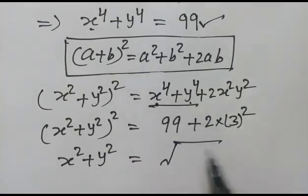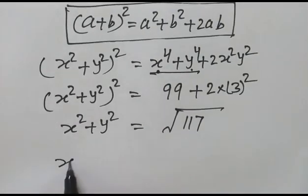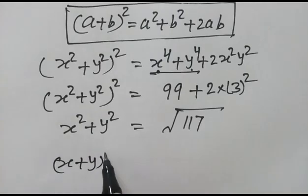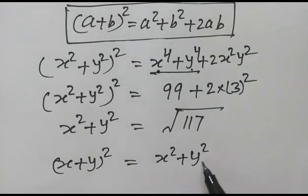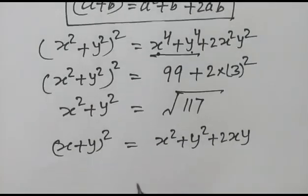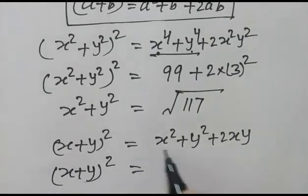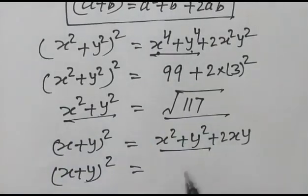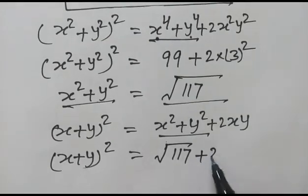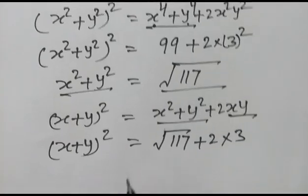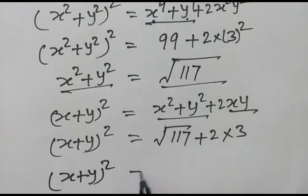Therefore x squared plus y squared equals square root of 117. Now x plus y whole squared equals x squared plus y squared plus 2xy. So x plus y whole squared equals square root of 117 plus 2 times xy, which is 2 times 3, equals 6.